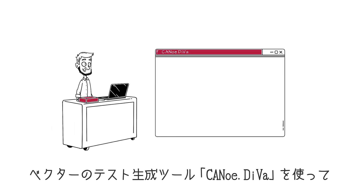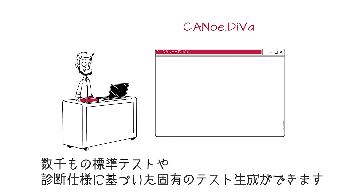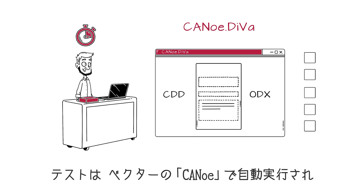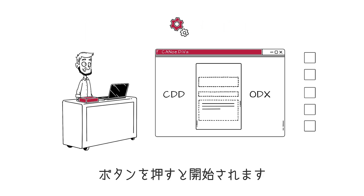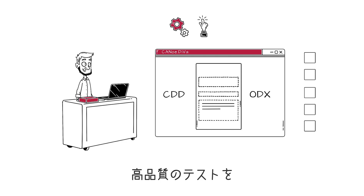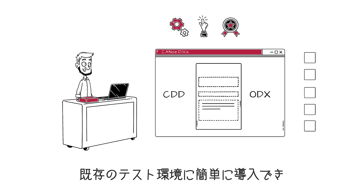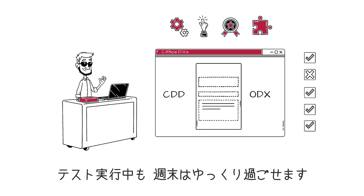Vector's test generator Canoo Diva generates thousands of standard tests and specific tests based on the diagnostic description. These tests run automatically in Canoo. They are started at the push of a button, guarantee high quality and can be easily integrated into existing test environments. So you can go into the weekend completely relaxed during tests.